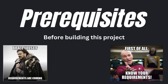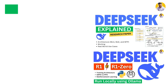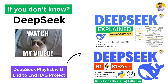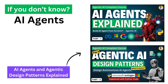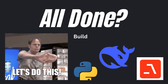First, get all the prerequisites — listen and learn carefully. The first thing is you need to know about DeepSeek: what it is, how it works, and how to load it locally using Ollama. You have to watch these two videos, and I will put the links in the video description. Then you need to know about AI agents — what they are, how they work, and what the agentic design patterns are. Watch those two videos to get familiar with AI agent workflows, designs, and workings.